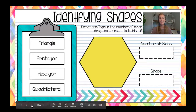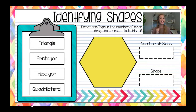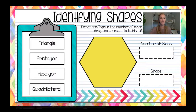Let's try this next one. One, two, three, four, five, six — another six-sided figure. What do we call a six-sided figure? A hexagon. Very good, a hexagon.